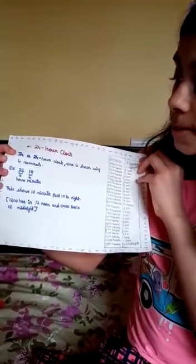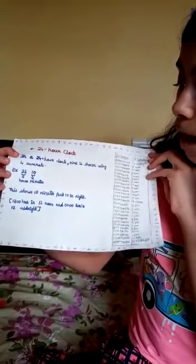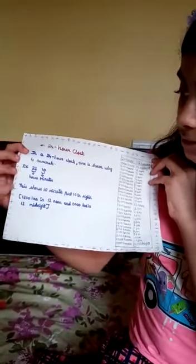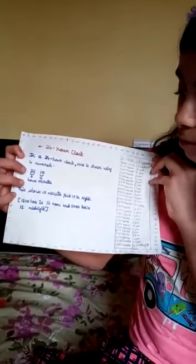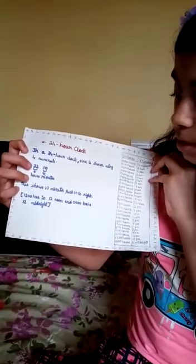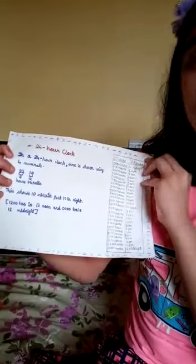This shows 10 minutes past 10 in night. 1 to 0 0 hours is 12 noon and 0 0 0 0 hours is 12 midnight.